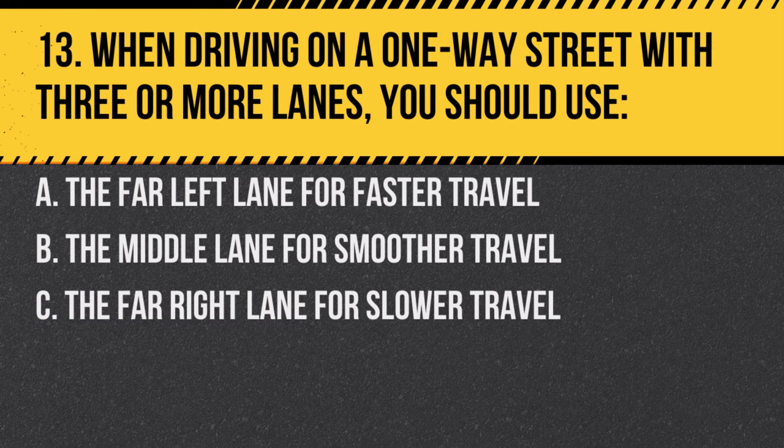Question 13. When driving on a one-way street with three or more lanes, you should use: a. The far left lane for faster travel. b. The middle lane for smoother travel. c. The far right lane for slower travel. Answer: b. The middle lane for smoother travel. It typically offers more options for movement.